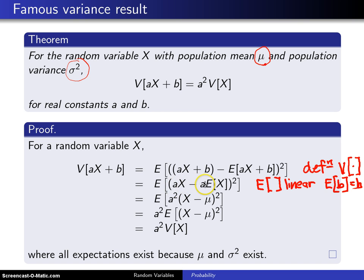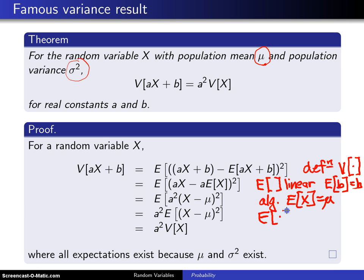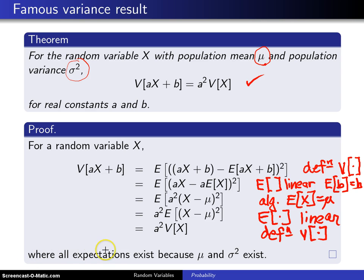What is left is ax minus a times the expected value of x, because constants can be pulled out of expected value operators. You can then pull an a out of both terms and square it, giving a squared times the expected value of x minus mu, all squared. Since a squared is a constant and the expected value of x equals mu, and since the expected value operator is linear, a squared gets pulled out front. This final expression is exactly the definition of the population variance, giving us the result we set out to prove, assuming all expectations exist since mu and sigma squared exist.